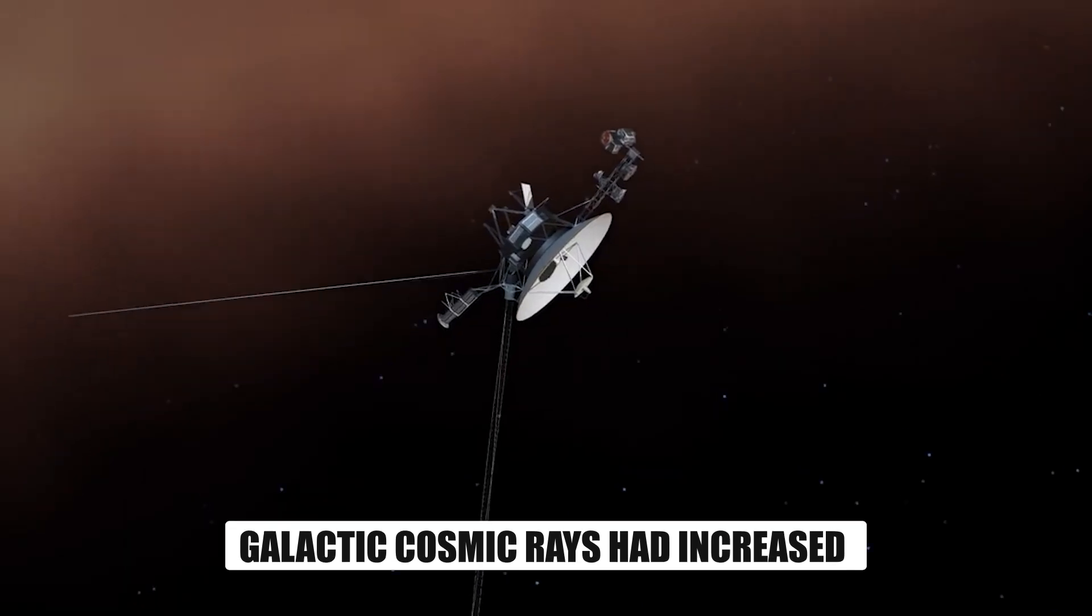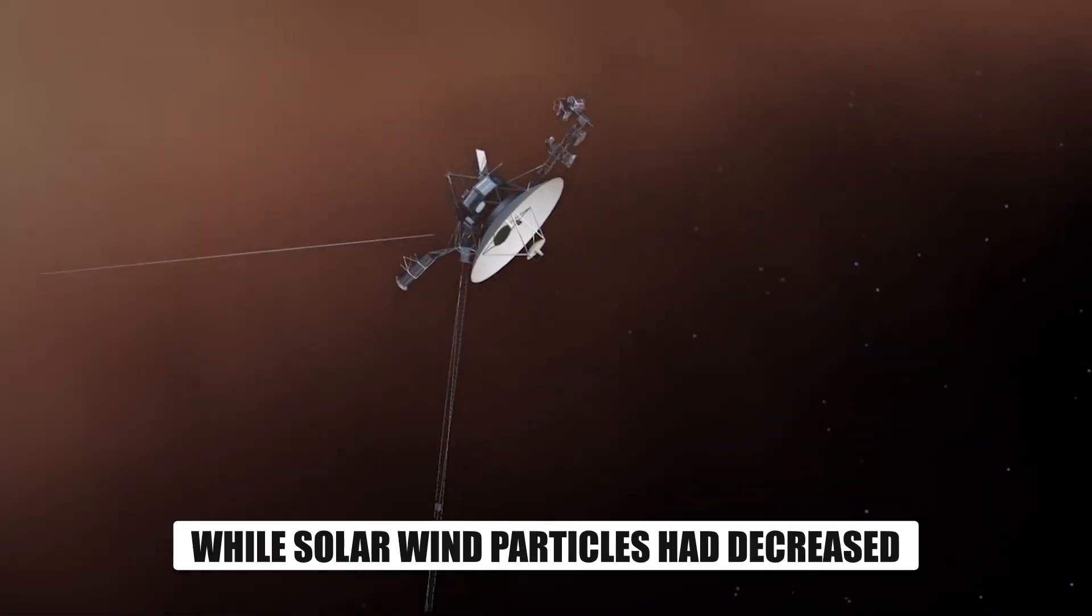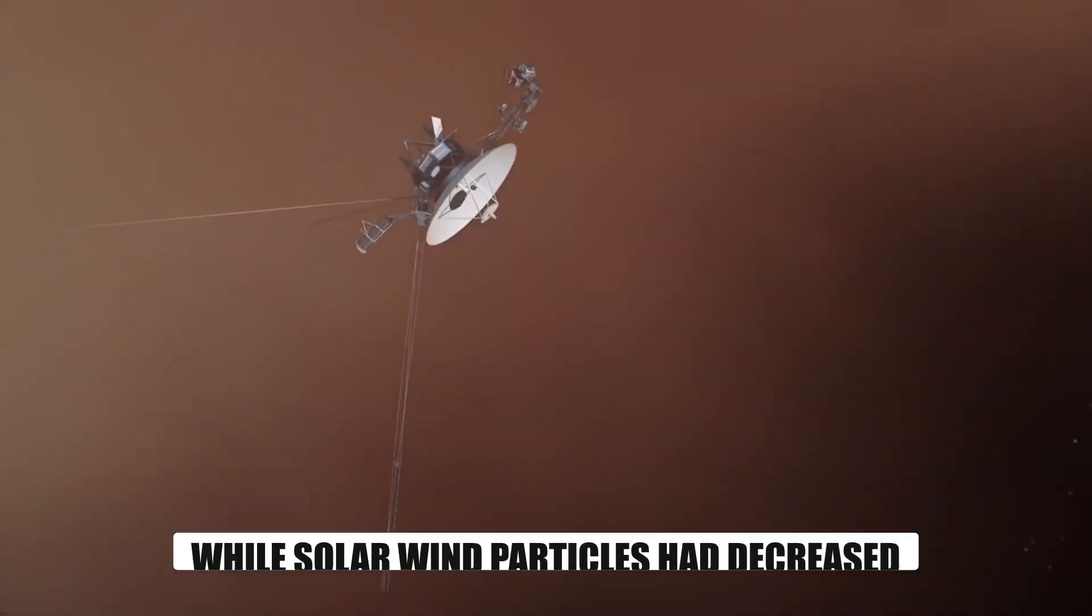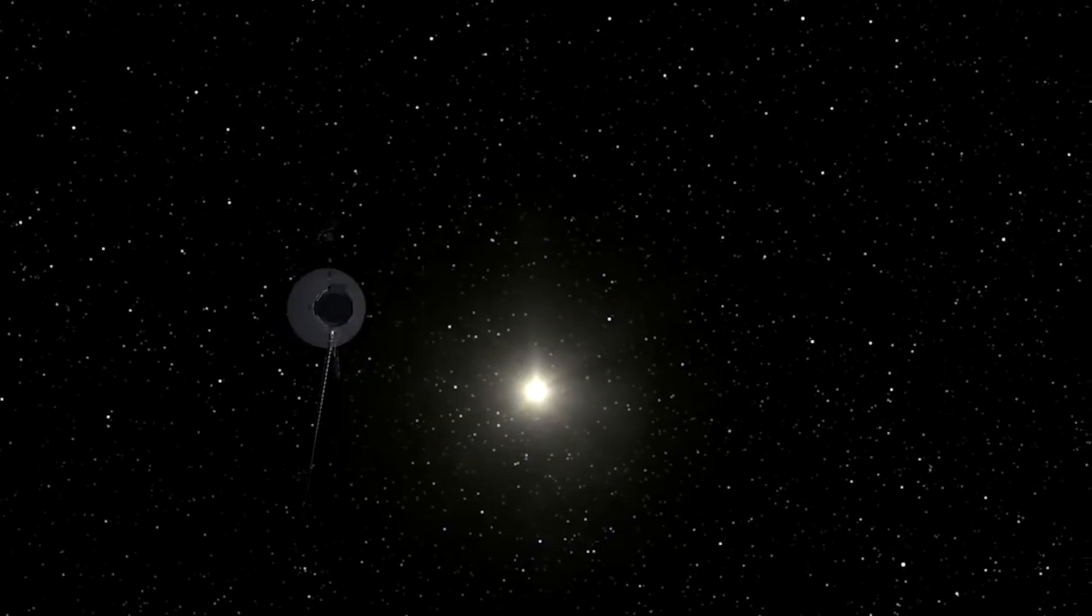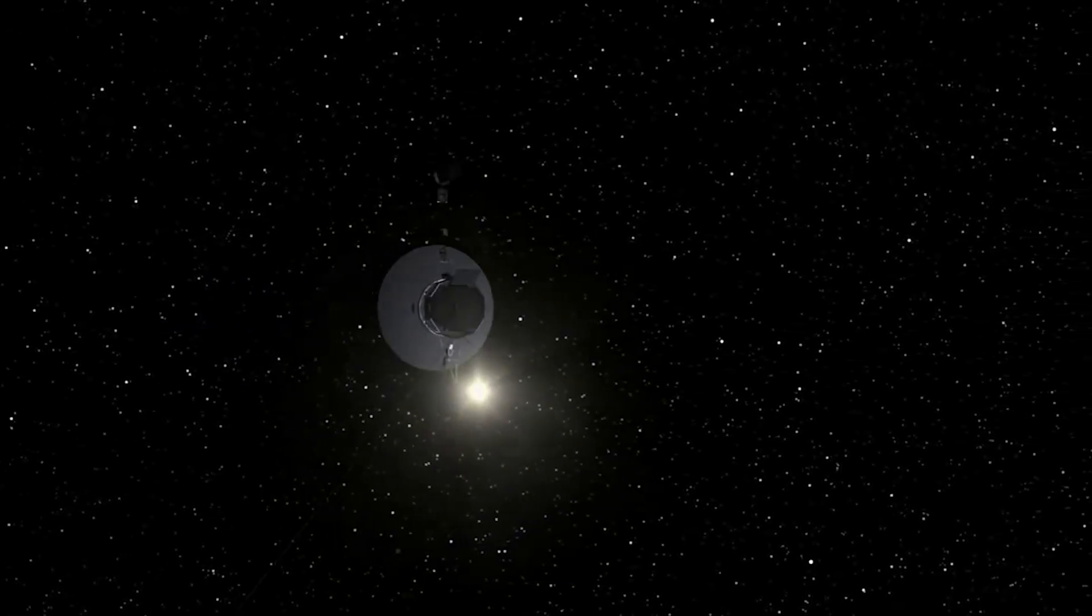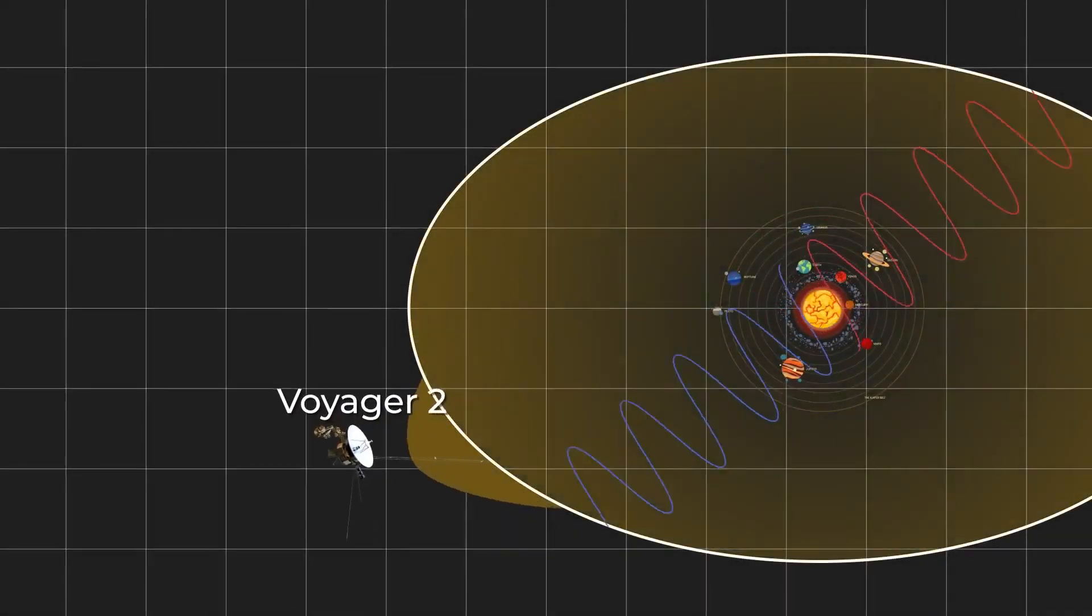However, the discovery that galactic cosmic rays had increased while solar wind particles had decreased was made by Voyager 1. The most convincing evidence for the heliopause's existence came in 2012. The signal proved that Voyager 1 had entered interstellar space.